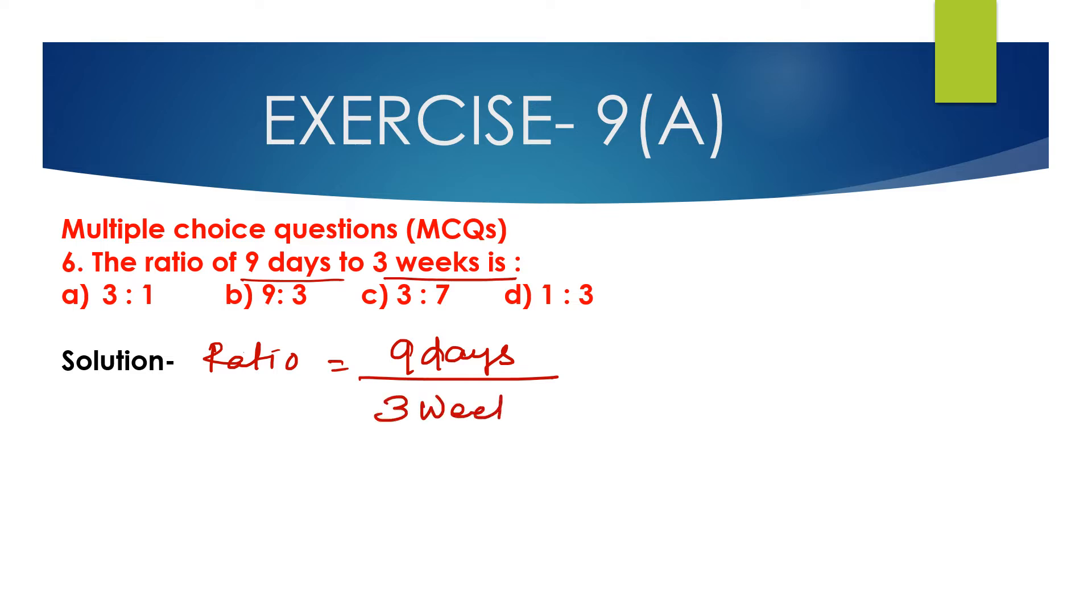We know 1 week - here the antecedent is 9 days and consequent is 3 weeks, but the antecedent and consequent are not of similar unit. The antecedent is in days and the consequent is in weeks, so first we have to convert these weeks into days. We know 1 week is 7 days, so multiply 3 with 7.